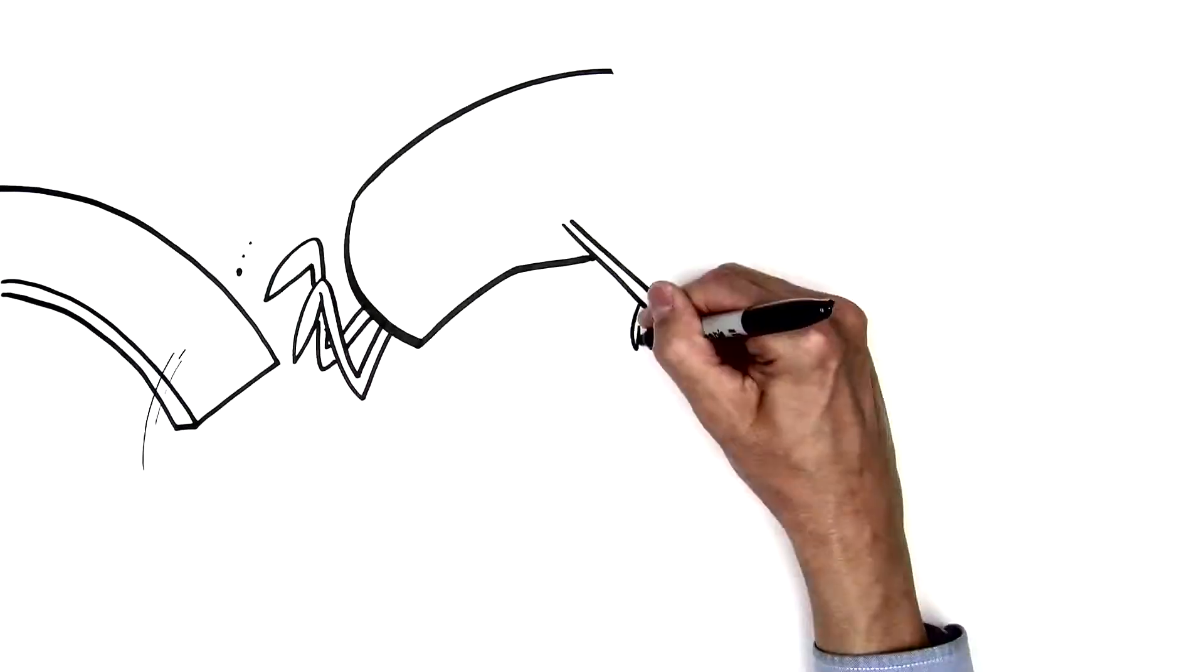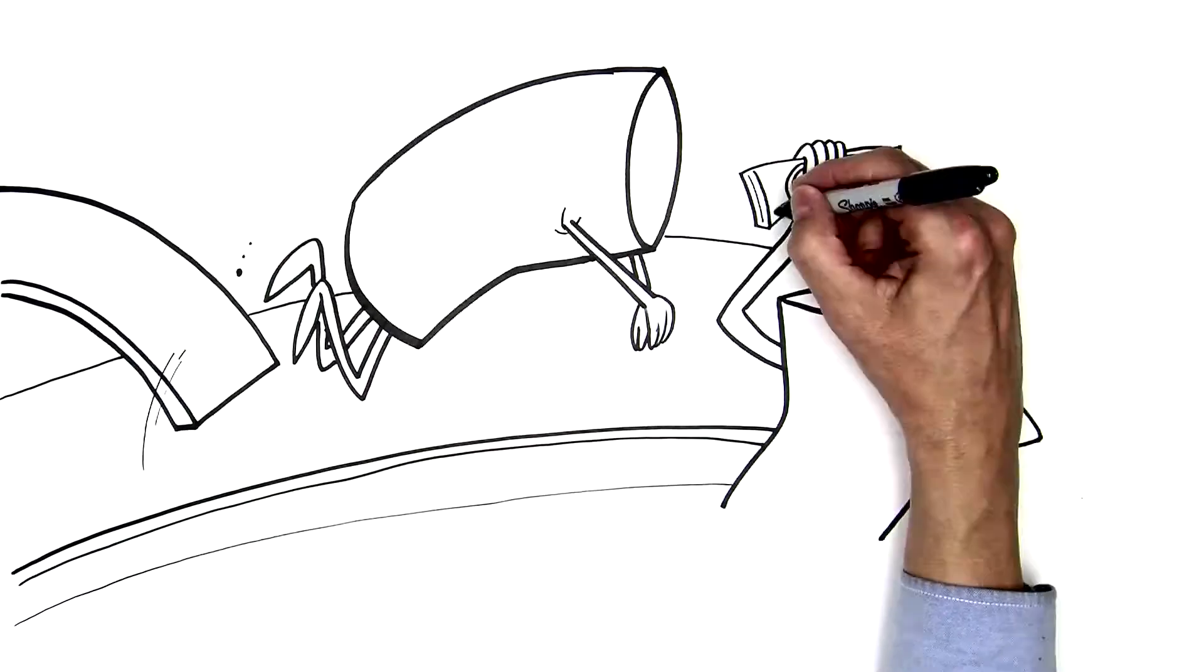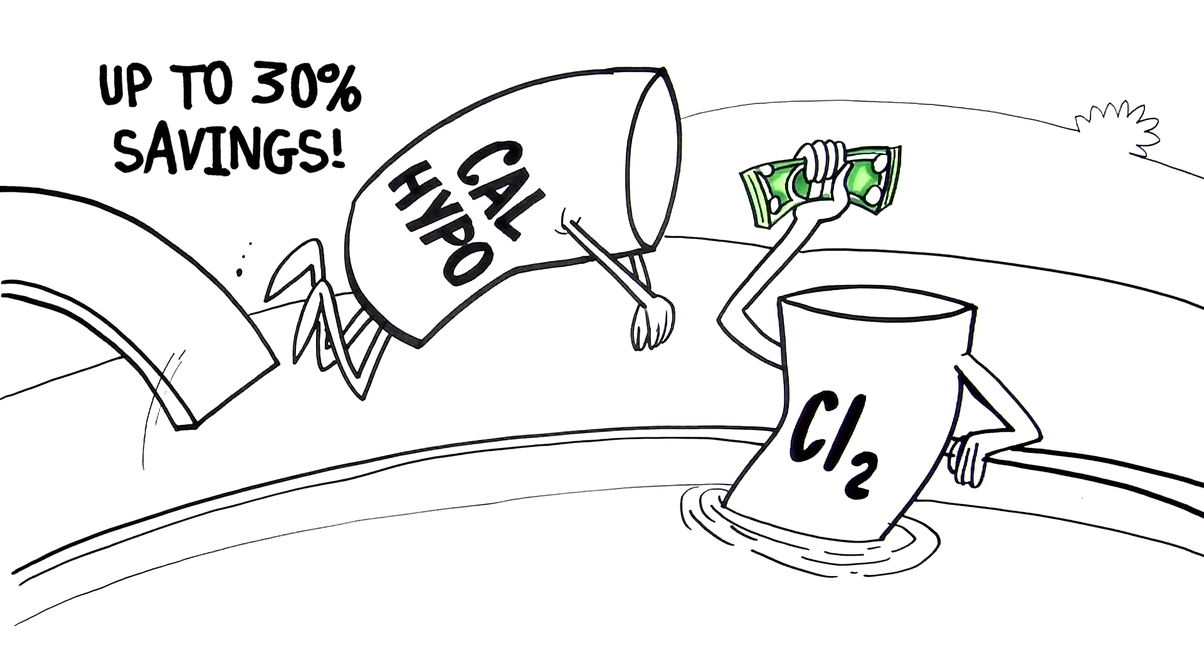Not only that, backwashing less keeps treated water out of the drain and in the pool, saving up to 30% in chemical costs.